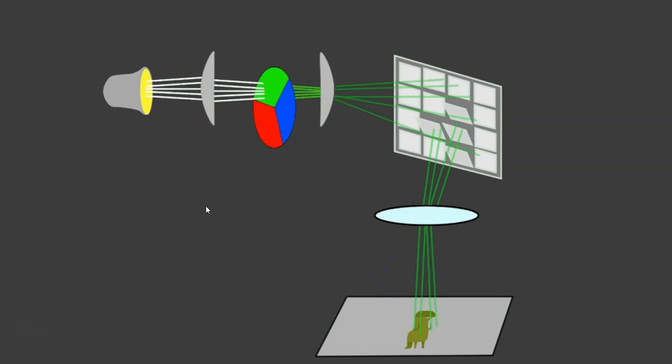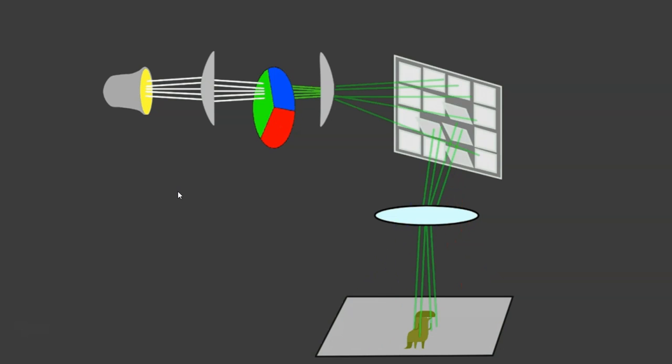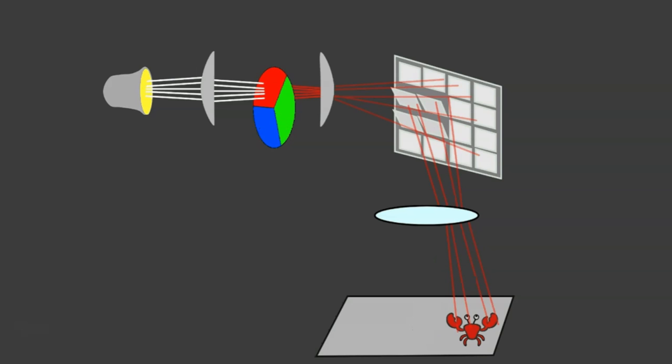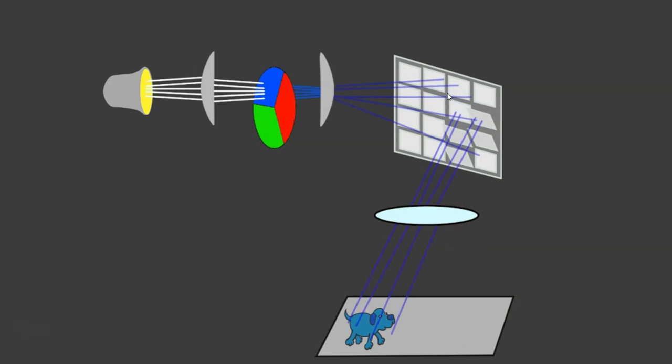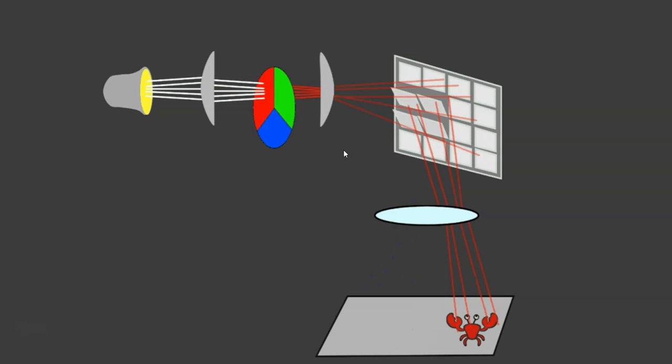And there you go, it's slowed down again now so you can see it's just doing individual ones. So that's how digital light projectors work: they just rotate through three different colors and use a digital micromirror device here to either reflect the light onto the lens to be displayed...